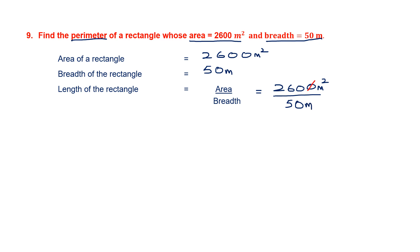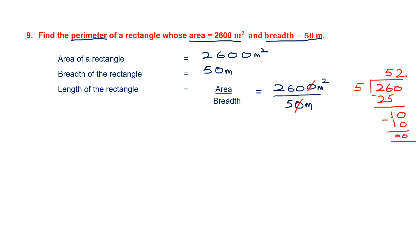2,600 meters squared divided by breadth which is 50 meters. Let's cancel the zeros — 0 and 0 cancel. Now I need to divide 260 by 5. Taking 26: 5 fives are 25, remainder 1. Bring down 0, making 10. 5 twos are 10. So I have found the length of the rectangle to be 52 meters.